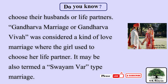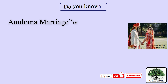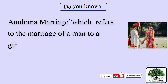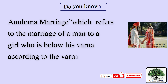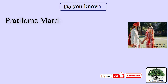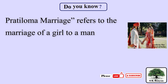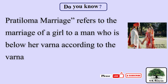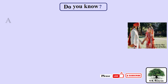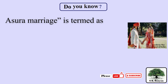It may also be termed a Svayamvara-type marriage. Anuloma marriage refers to the marriage of a man to a girl who is below his varna according to the varna system. Pratiloma marriage refers to the marriage of a girl to a man who is below her varna according to the varna system. Asura marriage is termed as a marriage that takes place between two people based on a purchase system.